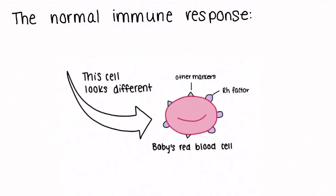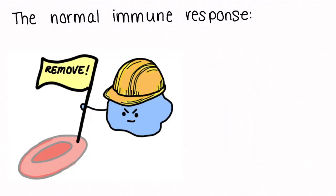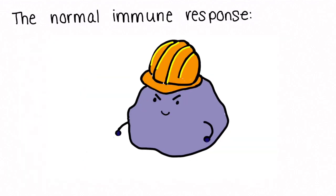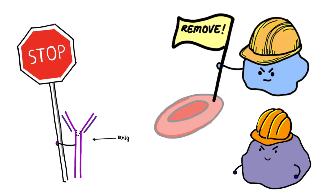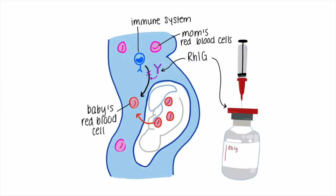How does RHIG work? To understand how RHIG works, it is important to know how the normal immune response would occur. When the body detects foreign blood cells, it will initiate the following response. First, it will label the baby's red blood cells for clearance by producing antibodies. Second, it will remove the labeled red blood cells. RHIG prevents the body from forming antibodies against the baby's red blood cells.